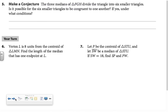We are asked, is it possible for the six smaller triangles to be congruent to one another when we draw all three medians and end up with six smaller triangles? Yes, it is possible in an equilateral triangle.